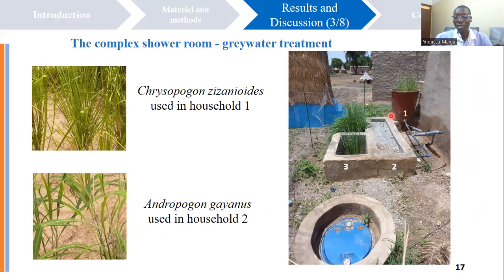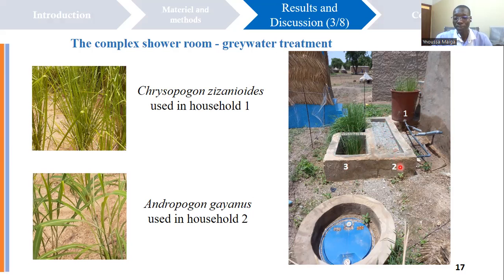It has two main components: a vertical flow filter and a horizontal flow filter. The laundry and dishwashing greywater is collected and flows directly into the vertical flow filter. The shower water is collected directly to the horizontal flow filter, which is made of two components: an unplanted filter and a planted filter containing sand and plants. After the filters, there is a storage tank for treated greywater, which can be collected and reused for gardening.